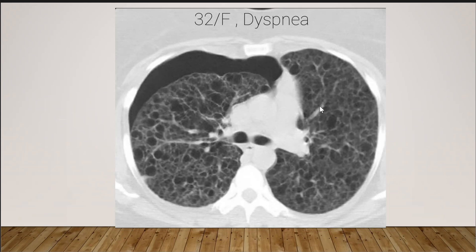What is the diagnosis? According to the history — female, dyspnea, and right-sided pneumothorax — it is lymphangioleiomyomatosis, or LAM (L-A-M). This is a diffuse cystic disease of the lung due to smooth muscle proliferation of the distal airway.